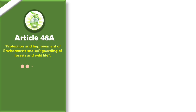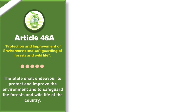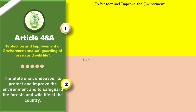This article talks about protection and improvement of environment and safeguarding of forests and wildlife. The provision of Article 48A says that the state shall endeavour to protect and improve the environment and to safeguard the forests and wildlife of the country. Article 48A is guiding states and state authorities to work towards two things: first, to protect and improve the environment, and second, to safeguard the forests and wildlife of the country.